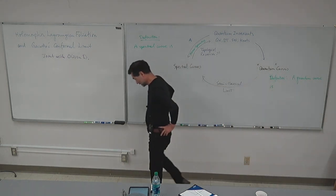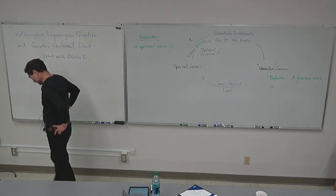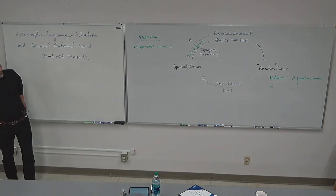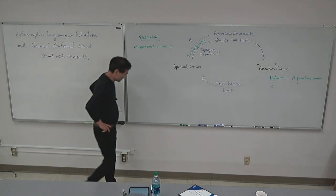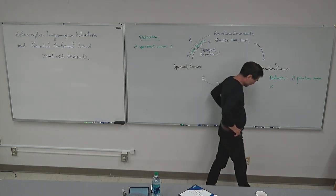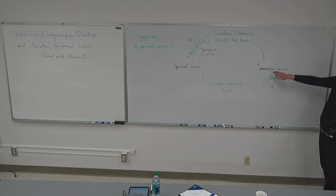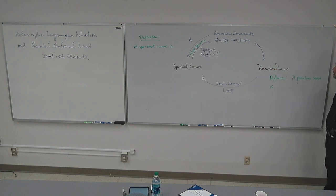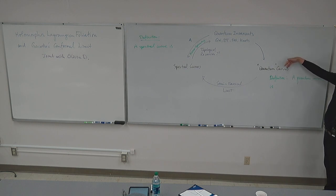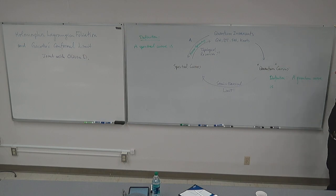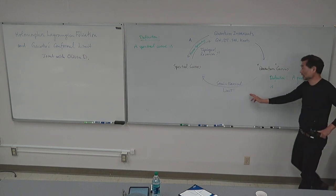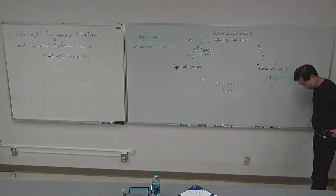Aganagic, Dijkgraaf, Klemm, Marino, Witten, Gukov, Sukhovski, Marino, Grassi, Hatsuda, Marino, and so on — these people discovered the concept of quantum curves, which are indeed operators in which certain generating functions of these invariants are in the kernel. And then from here, you apply the semi-classical limit to find spectral curves.